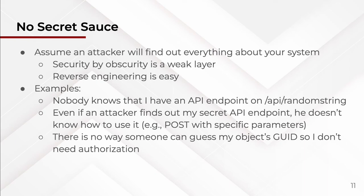Reverse engineering is easy. Examples I've heard: 'nobody knows I'm using this API endpoint with a random string — nobody will find it.' Don't do that — they can eventually figure it out. Or 'even if they find my API endpoint, there's no way they can figure out the parameters' — they can brute force them or sniff sample requests. Using GUIDs as protection against direct object references is not a bad idea to make guessing harder, but it's not enough — you should use proper authorization, validate the GUID, and make it an additional layer, not the only protection mechanism.